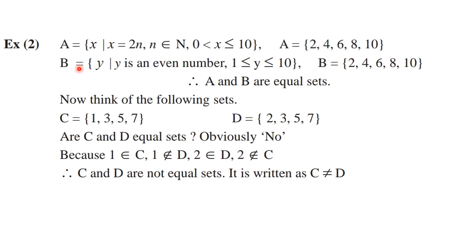Consider another example: A contains all x such that x = 2n where n belongs to natural numbers N and n lies between 1 and 5 (up to 10), giving A = {2, 4, 6, 8, 10}. Set B consists of even numbers between 1 and 10: {2, 4, 6, 8, 10}. Comparing both sets, they contain the same elements. Therefore, set A and set B are equal sets.